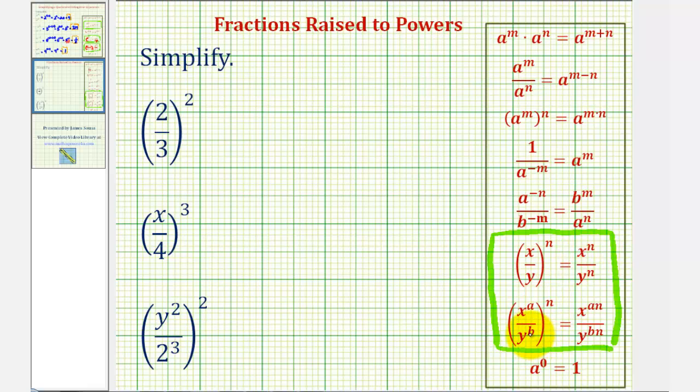Or if we have a fraction inside parentheses that also contains exponents like we see here, where we have x to the power of a divided by y to the power of b, all raised to the power of n. Since we have powers to powers, we multiply the exponents. This is equal to x to the power of a times n divided by y to the power of b times n.